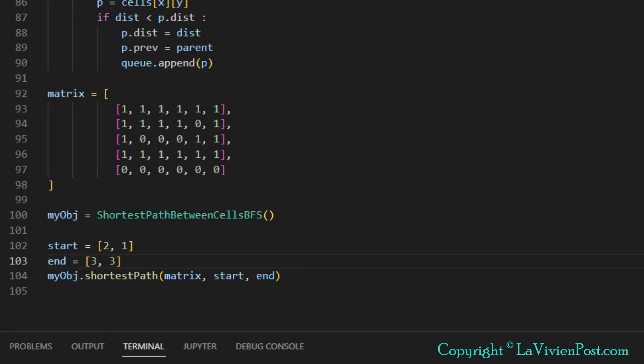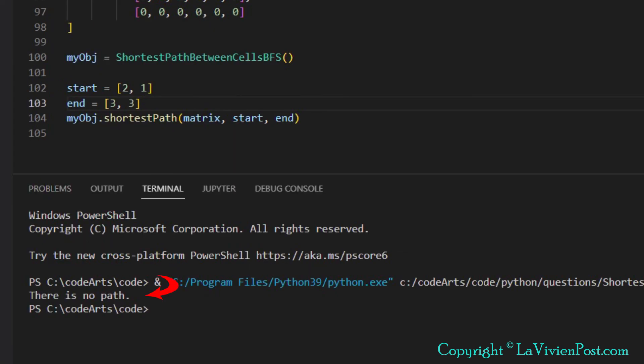In the third case, we define start cell 2,1, in which the value is 0. End cell is 3,3. We run the code. The return from BFS is an empty list.